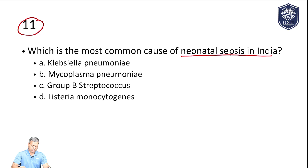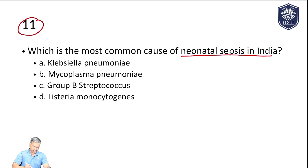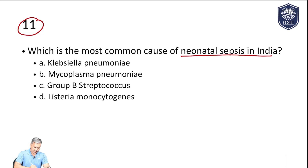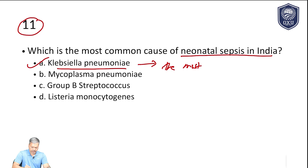Look at the options: A is Klebsiella pneumonia, B is Mycoplasma, C is Group B Streptococci, and D is Listeria. Mycoplasma pneumonia can be easily ruled out because it is not a common organism for neonatal sepsis. Options A, C, and D can all cause neonatal sepsis, but the most common one is Klebsiella. Klebsiella pneumonia is the most common bacteria which causes neonatal sepsis.